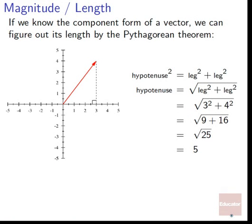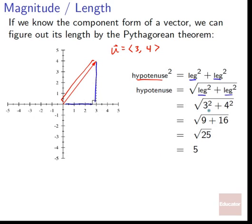If we know the component form of a vector, we can figure out its length by the Pythagorean theorem. The hypotenuse squared equals both legs squared added together, so the hypotenuse equals the square root of each leg squared and added together. For our vector ⟨3, 4⟩, one leg is three and one leg is four. The square root of nine plus sixteen is the square root of twenty-five, which equals five. So the length of this vector is five.